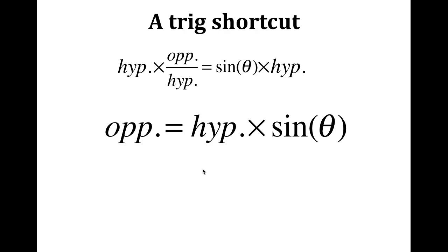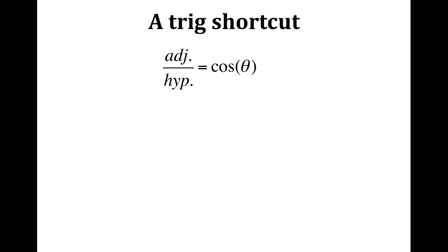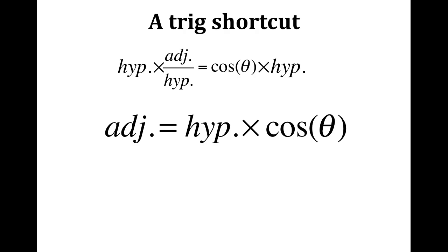Note: this does not say x equals hypotenuse times sine of theta — it's just the opposite side of the triangle. Sometimes that'll be x, sometimes y. We can get the shortcut for the adjacent side as well: adjacent over hypotenuse is cosine, so adjacent equals hypotenuse times cosine of the angle. Memorize this one too — whenever you want the adjacent side, take the hypotenuse times cosine of the angle.